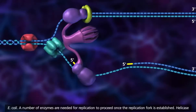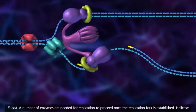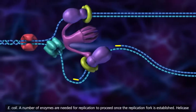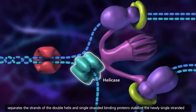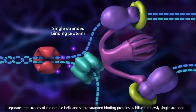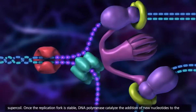A number of enzymes are needed for replication to proceed once the replication fork is established. Helicase separates the strands of the double helix, and single-stranded binding proteins stabilize the newly single-stranded regions. DNA gyrase is used to make sure the double-stranded areas outside of the replication fork do not supercoil.